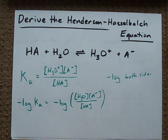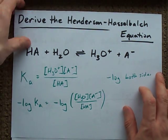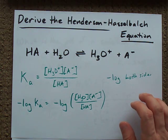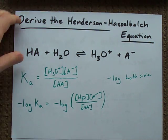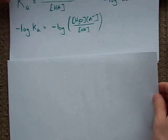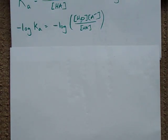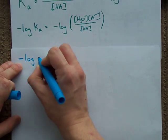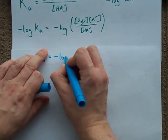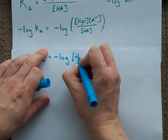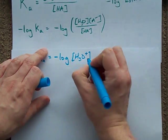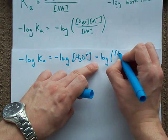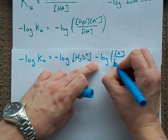Now, here's the cool thing. Because we're using a logarithm here, and there are certain log rules we can take advantage of, we're allowed to rearrange that equation to this: Negative log of Ka equals negative log H3O plus minus log A minus over HA.